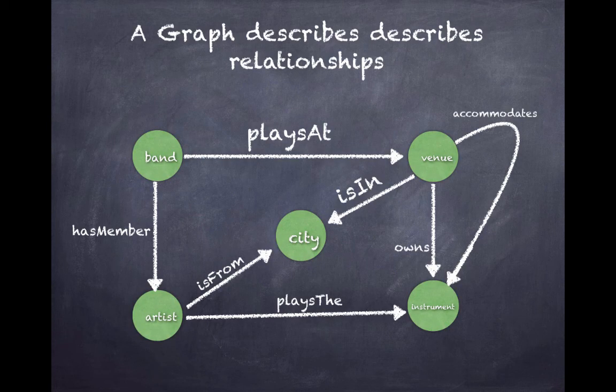A graph describes relationships. Suppose we're interested in organizing a tour for a bunch of bands. These bands might play at many different venues in many different cities.